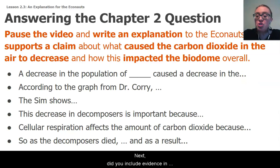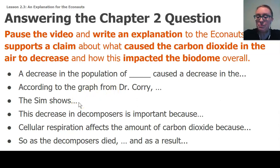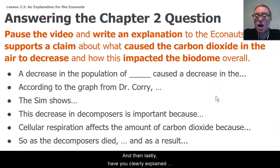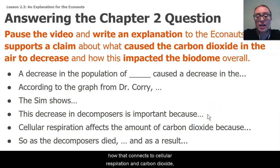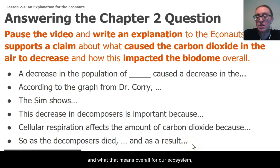Next, did you include evidence in your explanation from both Dr. Corey's graph as well as our sim investigation? And then lastly, have you clearly explained why this decrease in decomposers is important — how that connects to cellular respiration and carbon dioxide, and what that means overall for our ecosystem?